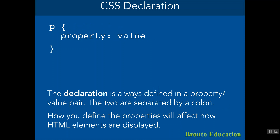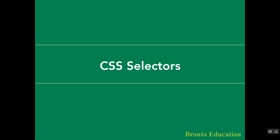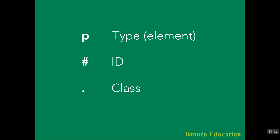In a CSS declaration, the property and value are separated by a colon. How you define the properties will affect how HTML elements are displayed. You can apply multiple declarations to a single selector by separating each declaration with a semicolon. So we can have multiple property-value pairs inside one set of curly brackets for the same selector.